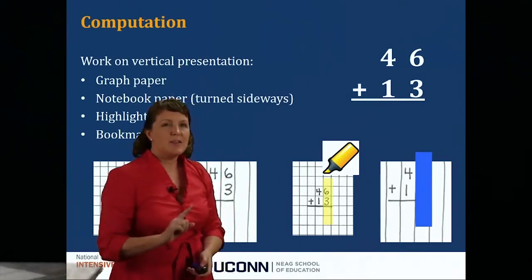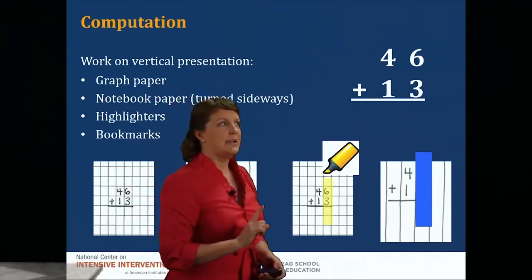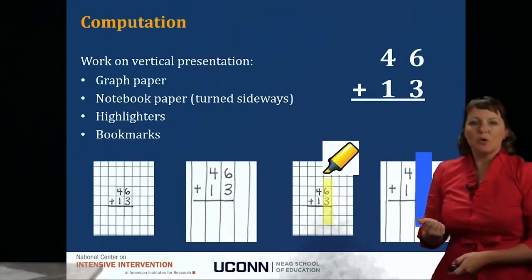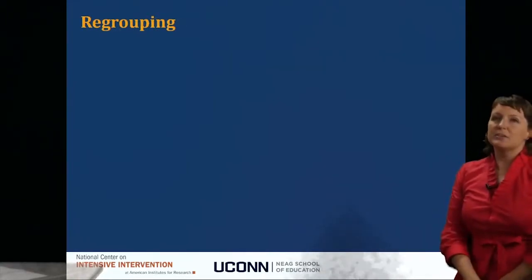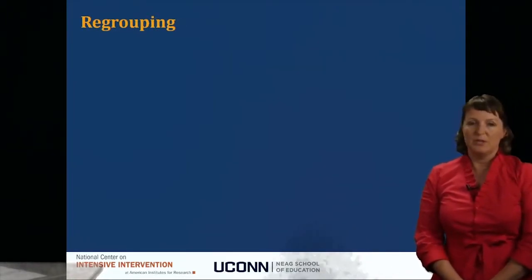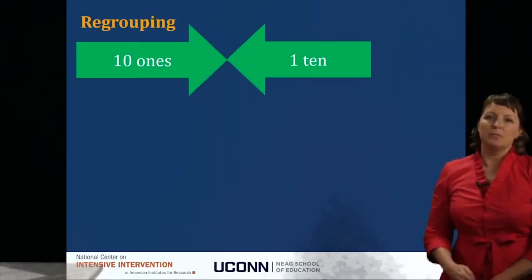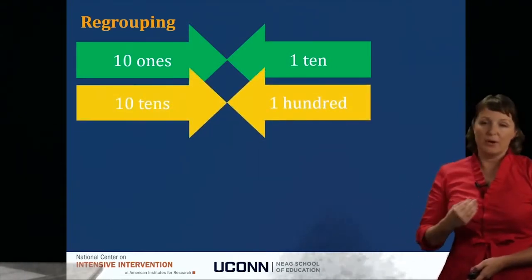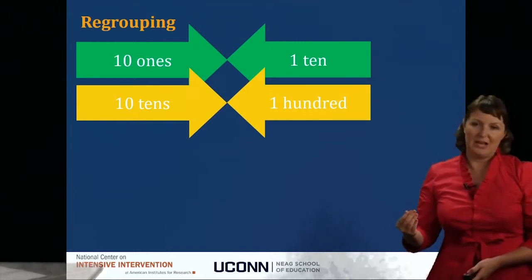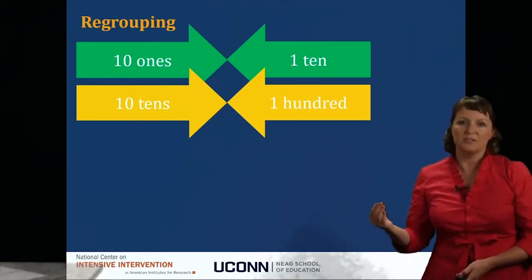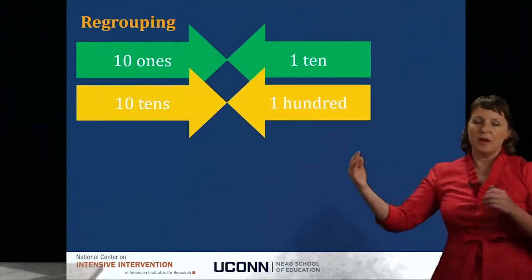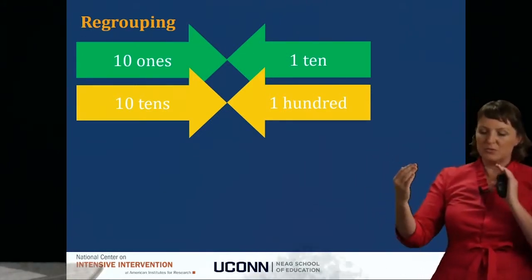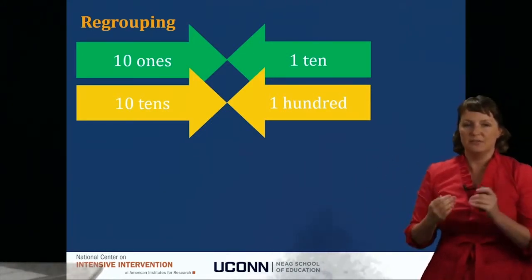Another background area we may need to address in intensive intervention, along with place value and organization, is understanding regrouping. When thinking about regrouping, we can regroup 10 ones for 1 ten, or 10 tens for 100 — and also 10 hundreds for 1000. Understanding this back-and-forth between tens and ones, or tens and hundreds, is fundamental.